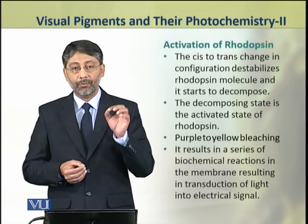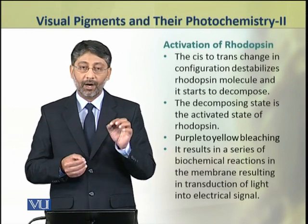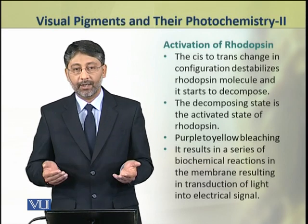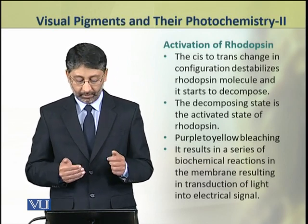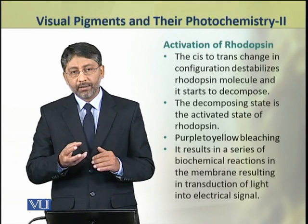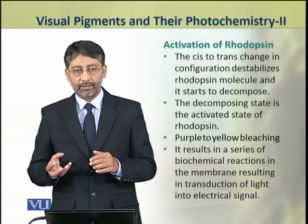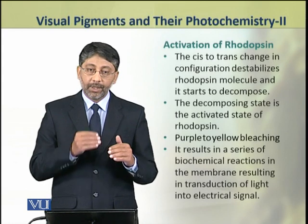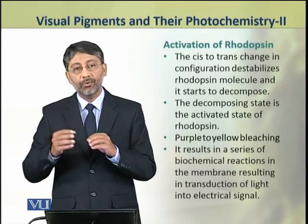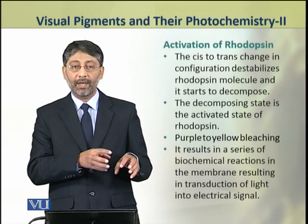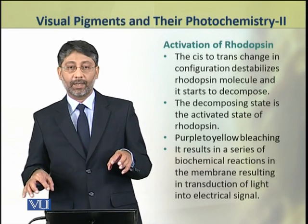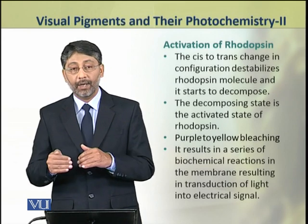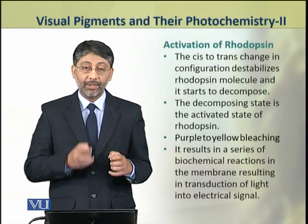This decomposing stage of rhodopsin is actually the activated state of rhodopsin. During these changes, the color of rhodopsin changes from purple to yellow — that is, from a dark color to a light color. That is why this phenomenon is also called bleaching.